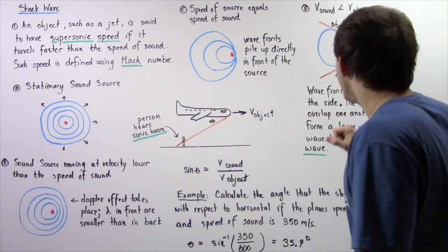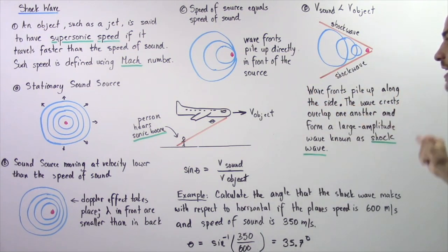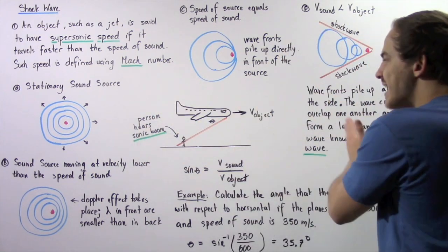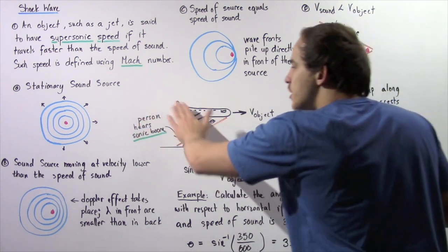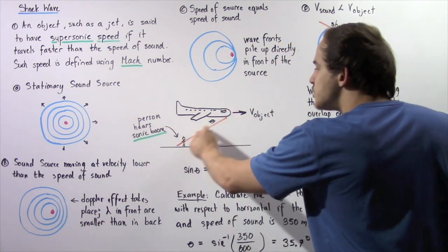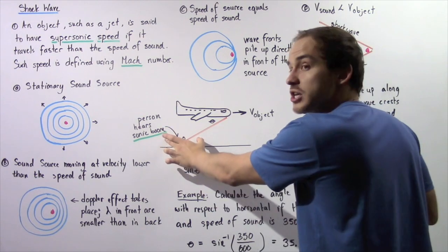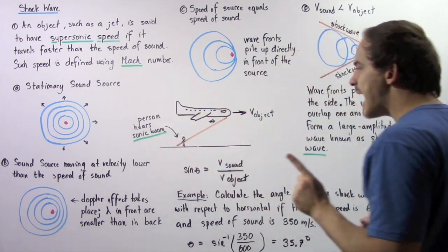The person will hear a loud boom that is known as a sonic boom when the airplane travels past it. So this line shown is the shock wave. So the plane will pass it and sometime after the plane passes, the person hears a sonic boom when the shock wave reaches this person.